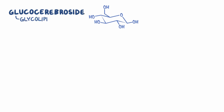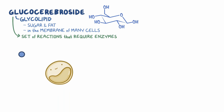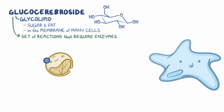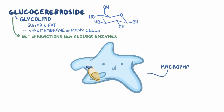Glucocerebroside is a glycolipid, which is a molecule containing both sugar and fat that's included in the membrane of many different cells. Glucocerebroside is formed through a set of reactions in the cell that require enzymes. Once the glucocerebroside is made, it becomes a part of various cells, and when these cells become old or damaged, they're often engulfed or eaten by immune cells called macrophages.